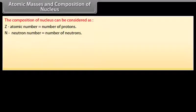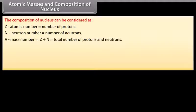The composition of nucleus can be considered as: Let Z be atomic number, which is equal to number of protons. Let N be neutron number, which is equal to number of neutrons. Let A be mass number, which is equal to Z plus N, which is equal to total number of protons and neutrons.